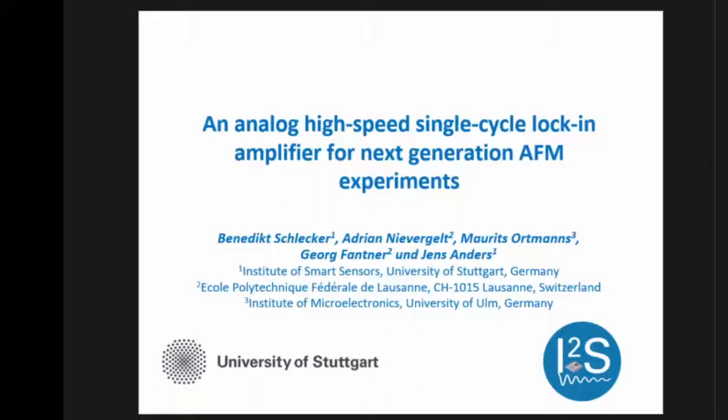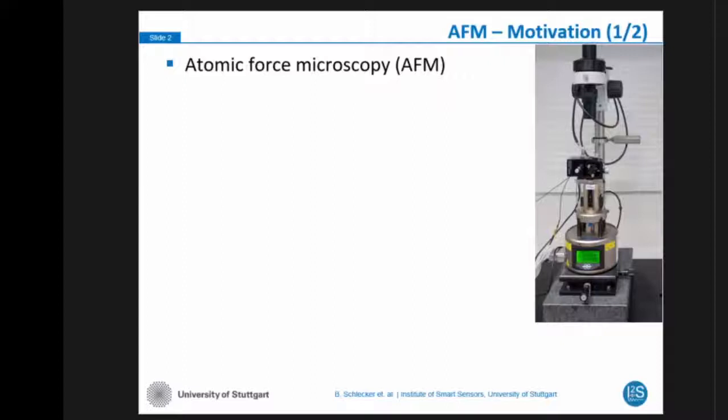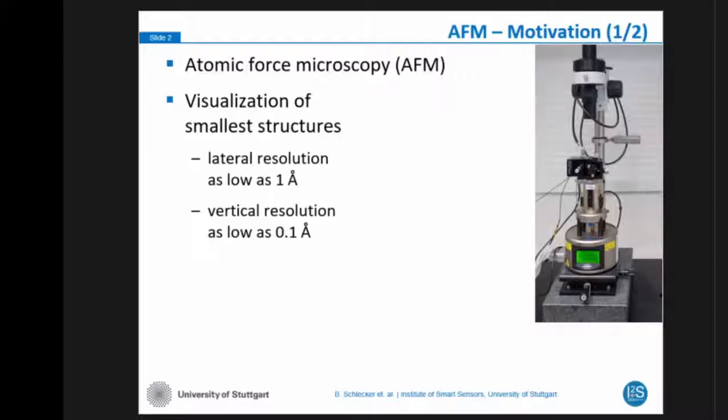We and our collaborators are working on atomic force microscopy. You can see here on the right side of the slide an AFM system with which we are working. A really good thing about AFM is you can visualize the smallest structures in the sub-nanometer range. For the lateral resolution, we achieve as low as one angstrom, which is a tenth of a nanometer, and the vertical resolution can even be ten times smaller at 0.1 of an angstrom.